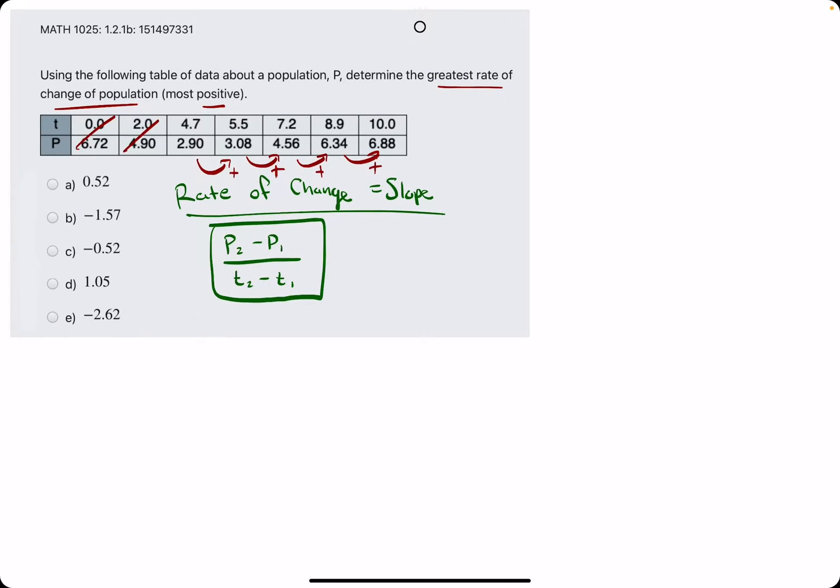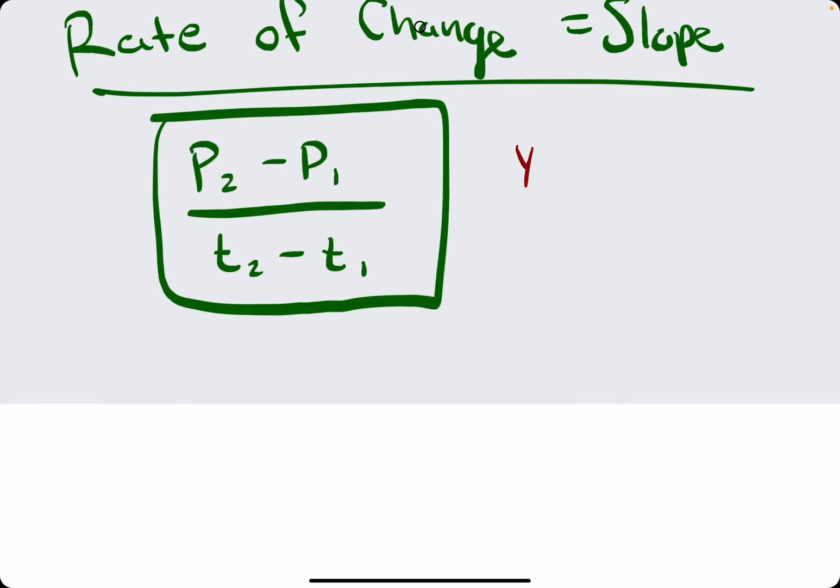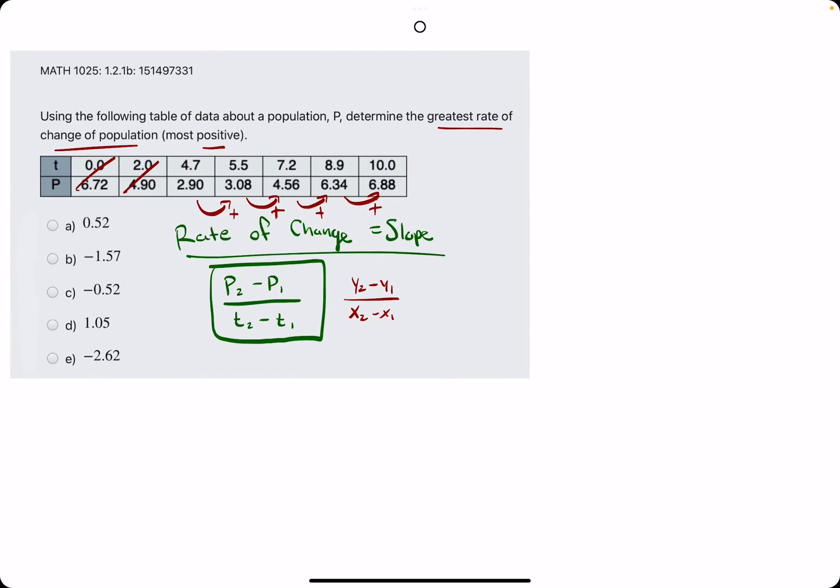Let's start by finding the slopes between, the slope between the first two points here by using slope formula. It's basically y2 minus y1 over x2 minus x1, but sort of in the context of the chart here.